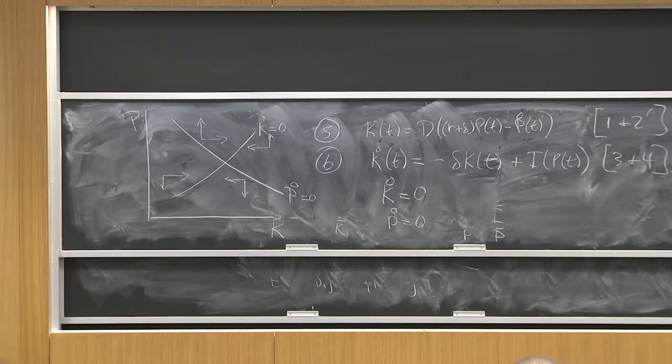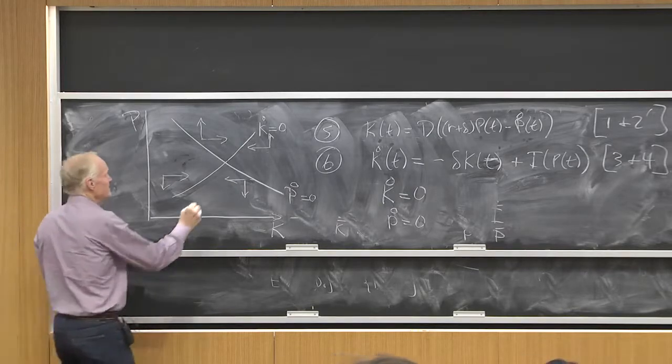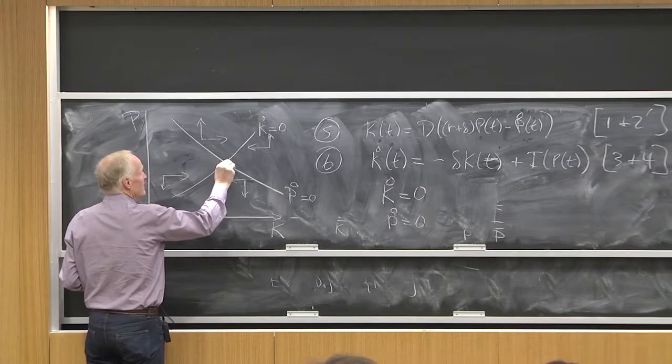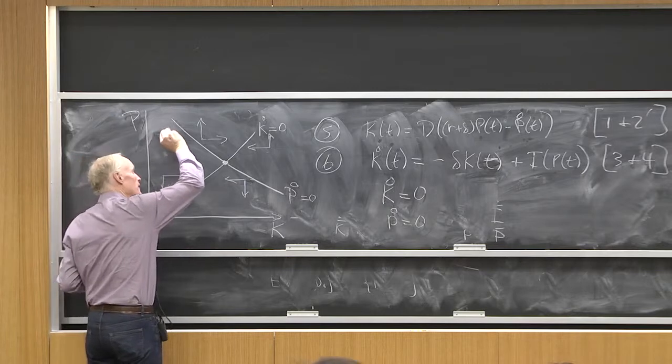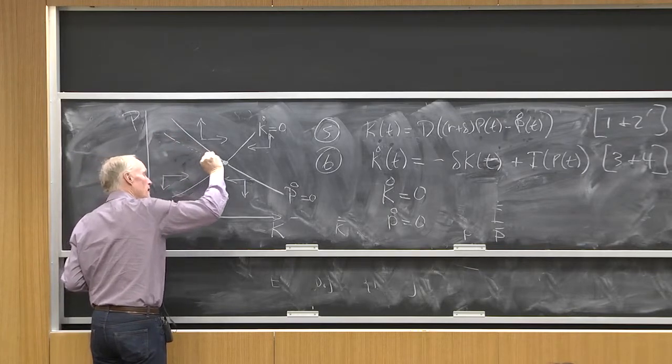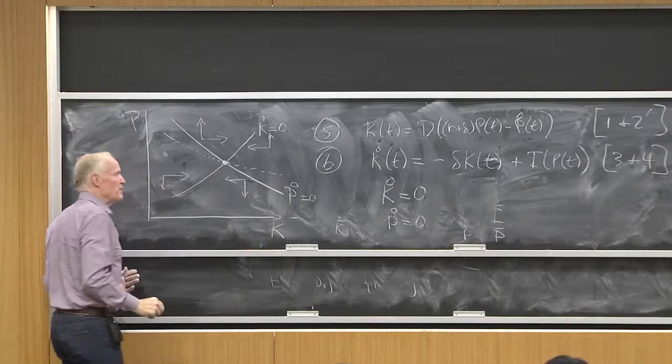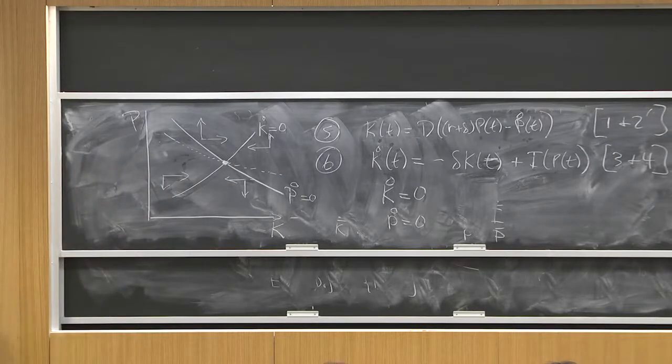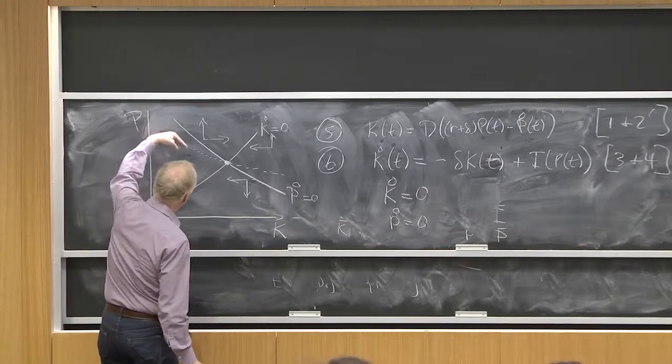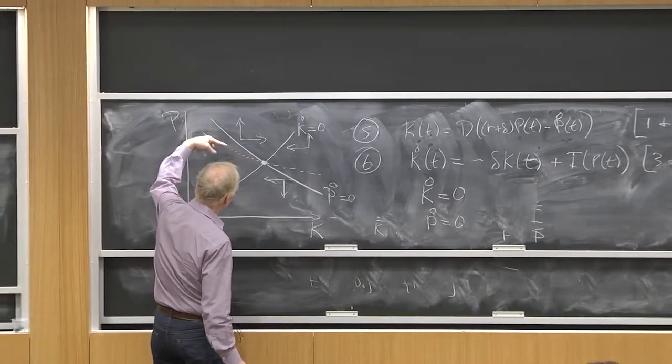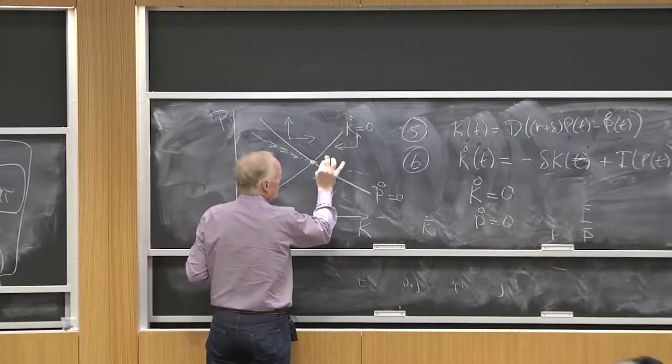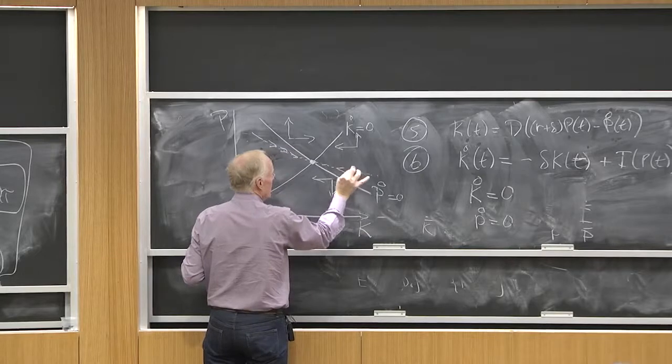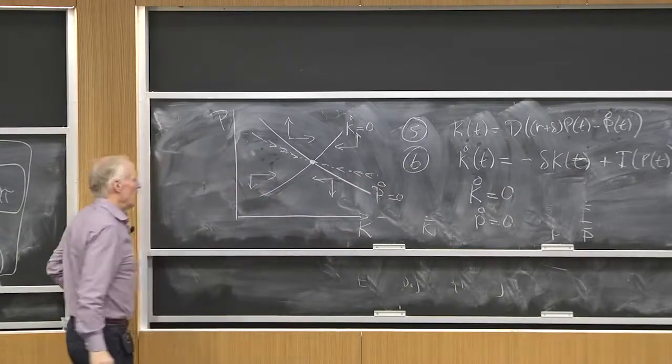So now, if I'm going to get to my steady state, how do I have to get there? Well, I've got to get there like through here. There's going to be some stable manifold. This is a saddle point type graph. So the stable manifold is going to come in like this. I've got to be coming, p has got to be falling and k has got to be rising if I'm coming in this way. And this way, I'm coming in this way.